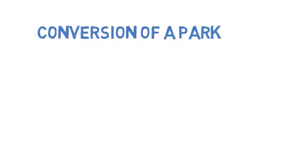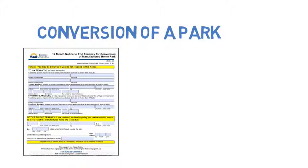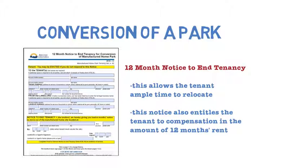If the landlord plans to convert all or a significant part of the park to a non-residential use, the landlord may serve a 12-month notice to end tenancy. This allows the tenant ample time to make arrangements for the relocation of their manufactured home. This notice entitles the tenant to compensation in the amount of 12 months' rent.